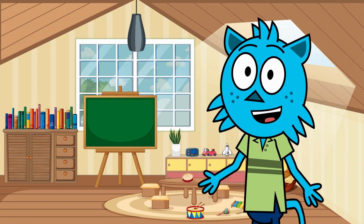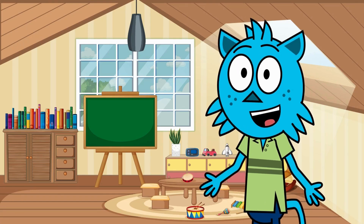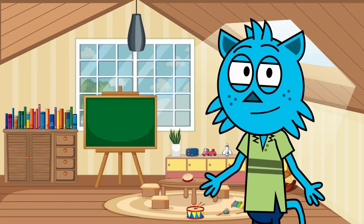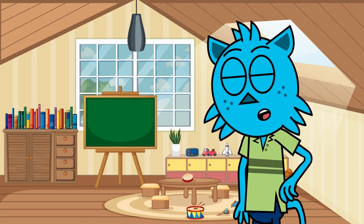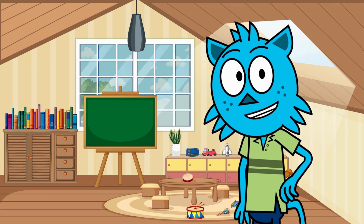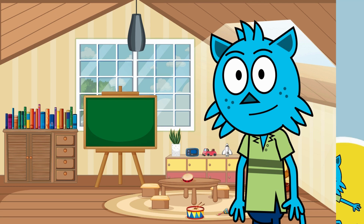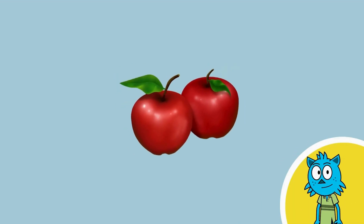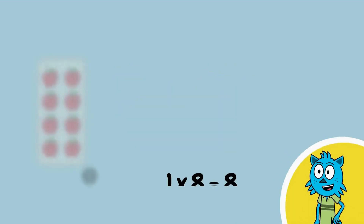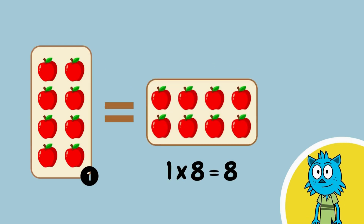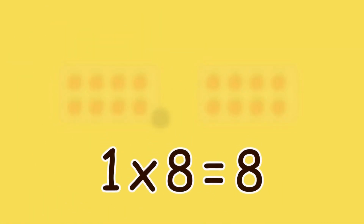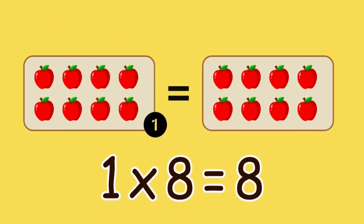Great job! You're getting the hang of it! Now, let's see how the eight times table works using objects. Let's start with some apples. One group of eight apples equals eight apples. One times eight is eight.